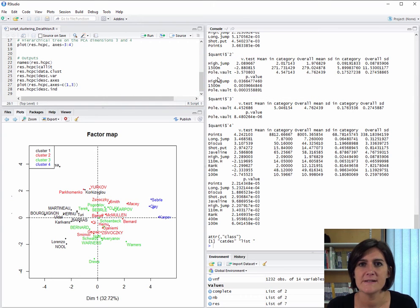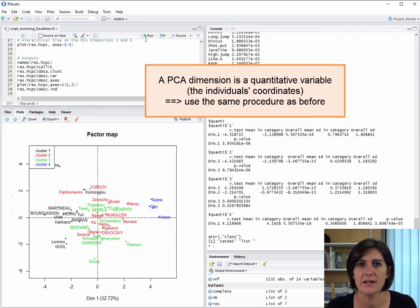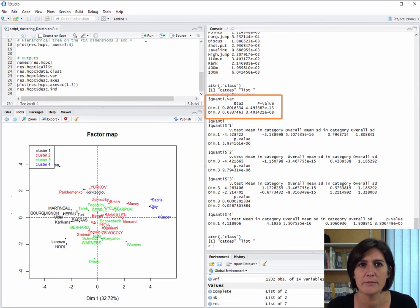We can also describe the classes using the axes, that is, the PCA dimensions in this example. These dimensions are quantitative variables, so exactly the same method as before can be used. We see that the first and third dimensions best characterize the classes here. Indeed, the first class has significantly smaller coordinate values than the other classes in the first dimension. For the individuals in class 2, they have significantly smaller coordinate values than the other classes in the third dimension. Individuals in the third class have significantly larger coordinate values in the third dimension and slightly smaller ones in the second dimension. Lastly, the individuals in the fourth class have significantly larger coordinate values in the first dimension.